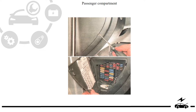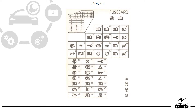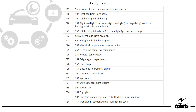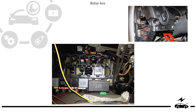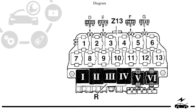Passenger compartment fuse box: location, diagram, assignment. Relay box: photo, diagram, designation.